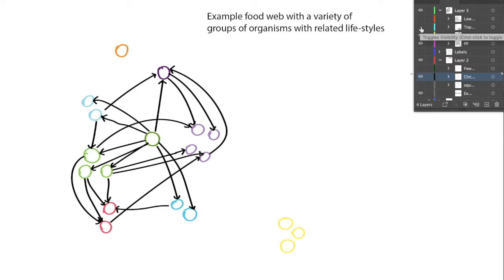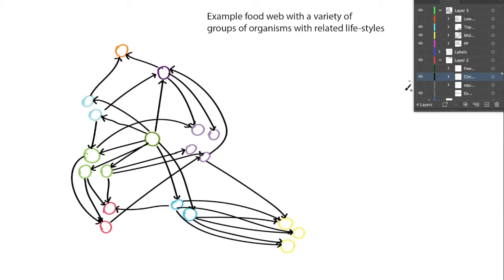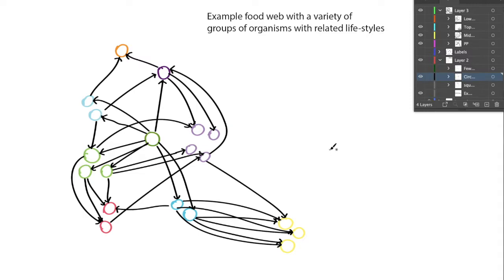There are certain types of organisms that eat others but aren't necessarily preyed on themselves — we often call these the top of the food web. This orange population of organisms eats some from the blue and the purple, and when it dies its resources go back into the ecosystem through degradation, but there's nothing that specifically preys on it. I'm not showing the degradation here because it's already complicated enough.